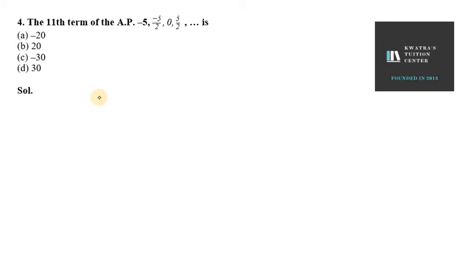Let's start with question number four, exercise 5.1. It says the eleventh term of the AP is -5, -5/2, 0, -5/2... so we need to find the eleventh term here.